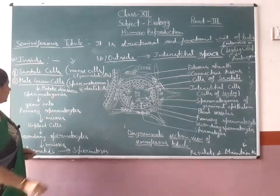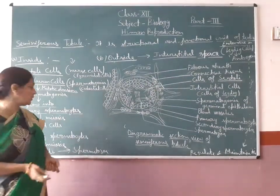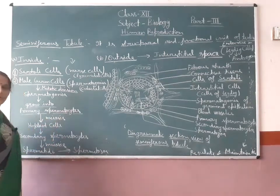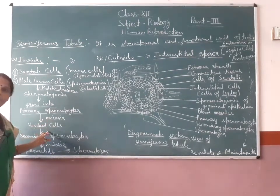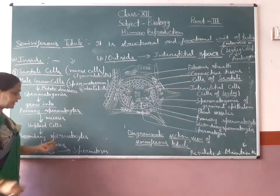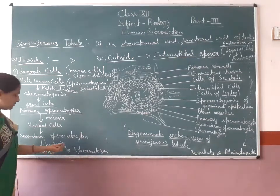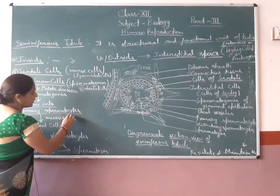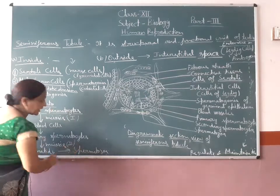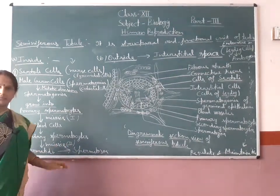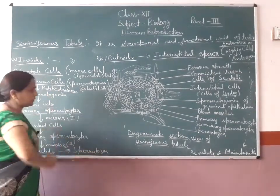This spermatogonia grows into primary spermatocytes when it matures and develops. After this, it undergoes meiosis and forms haploid cells known as secondary spermatocytes, and then divides again in meiosis second. Then the spermatids are formed. These spermatids undergo development and form the spermatozoa.